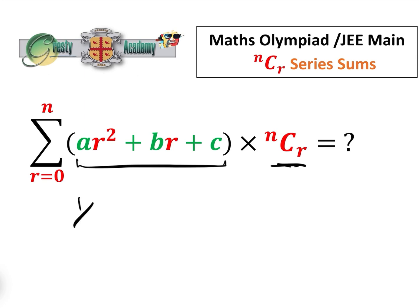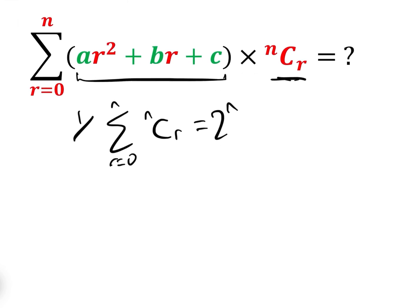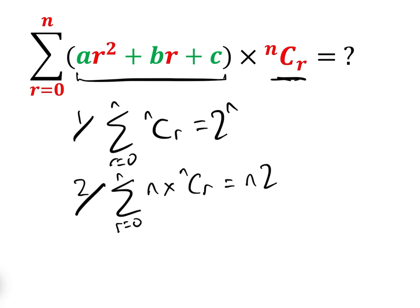Number one: the sum between R equals zero and N of NCR is two to the N. That one's quite well known. Number two: the sum between R equals zero and N of R times NCR is equal to N times two to the N minus one.